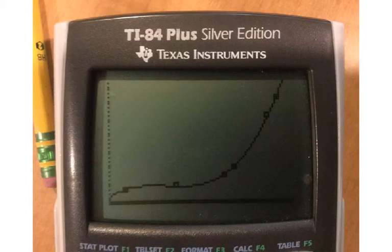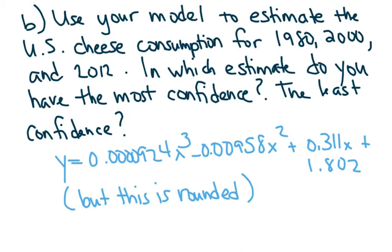You should get a graph that looks like this. This is what your scatter plot and the regression equation look like. And it fits pretty well. So the cubic model may actually be the best representation for this data. Now let's use our model to estimate the U.S. cheese consumption for 1980, 2000, and 2012. In which estimate do you have the most confidence? Which one has the least confidence?